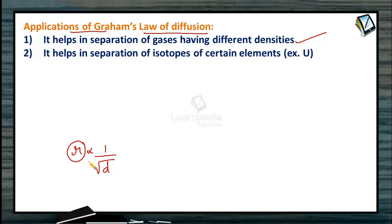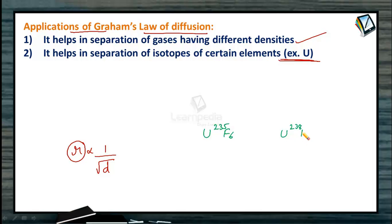The second application is separating isotopes of certain elements. The best example is Uranium, which exists in two isotopic forms: Uranium-235 and Uranium-238. Uranium is combined with Fluorine to form the corresponding hexafluoride — UF6 for U-235 and UF6 for U-238. These two substances differ in rate of diffusion because they have different molecular masses, and based on that we can separate one isotope from the other.